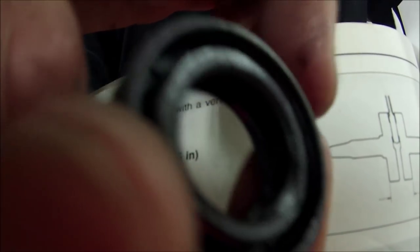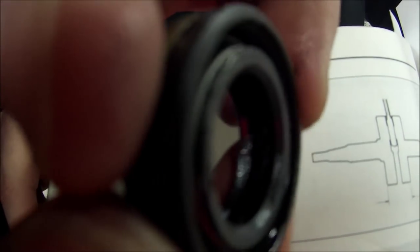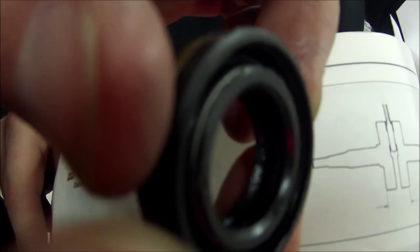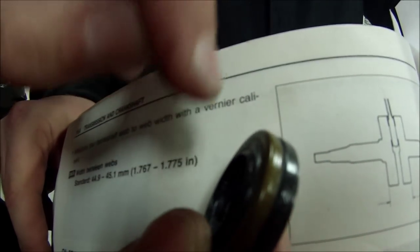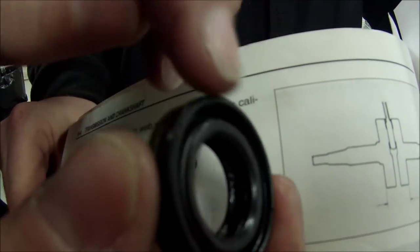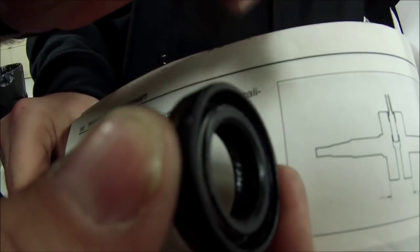We'll get really nice and close there so you can see that. Let's flip around to one side of that. Hopefully that's focusing there. You can see the spring inside. So the dust seal is typically the outside. And the spring, once again, is on the oil or fluid side.